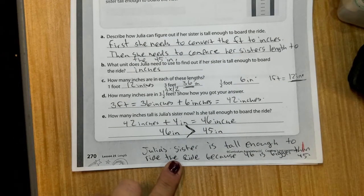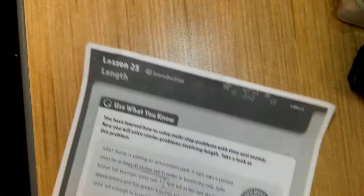Remember, alligator always eats the bigger number. Since Julia's sister is tall enough to ride the ride because 46 is bigger than 45.